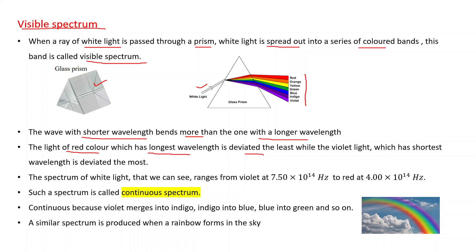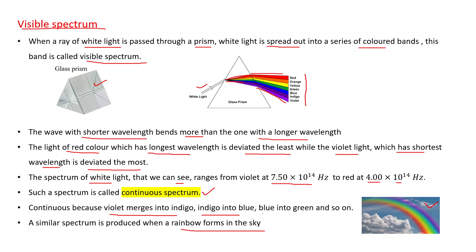Red light, having the longest wavelength, is deviated the least, while violet light, having the shortest wavelength, is deviated the most. The visible spectrum ranges from violet at 7.50 × 10¹⁴ Hz to red at 4.00 × 10¹⁴ Hz. This is called a continuous spectrum because violet merges into indigo, indigo into blue, and so on — just like a rainbow in the sky.